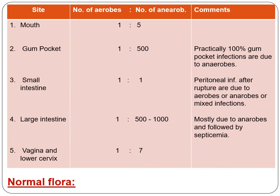Anaerobes are present in the body as normal flora — in the mouth, gum pockets, and oral flora. In the small intestine, the ratio of aerobes to anaerobes is 1:1, which is an important MCQ. In the large intestine, the ratio is totally different: aerobes to anaerobes is 1:500 to 1000, meaning anaerobes are very high in number in the large intestine.